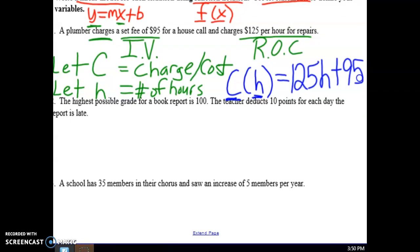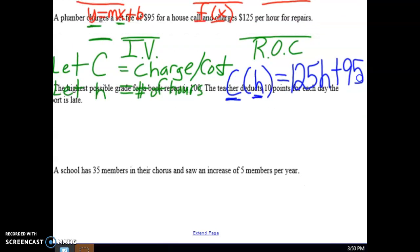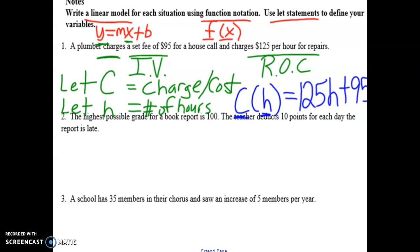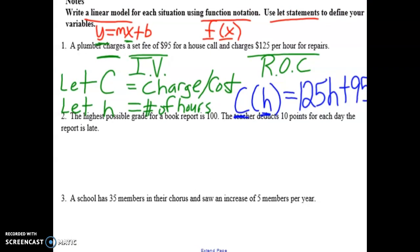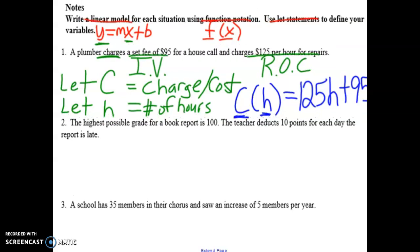The expression for this is 125 for every hour plus the 95 that we started with. So there you have your first linear model. The more you do this, the more you'll get comfortable with it. That's just the first one. So don't give up on yourself. We can figure this out with a few more examples.